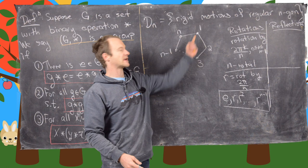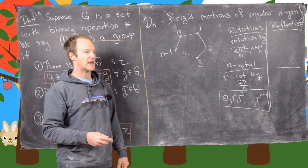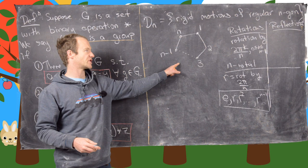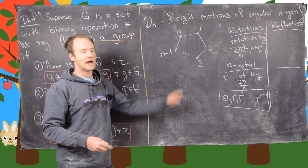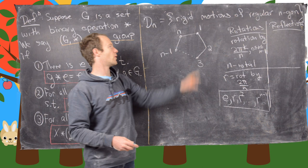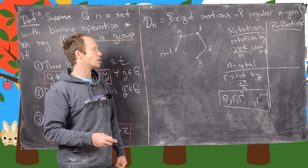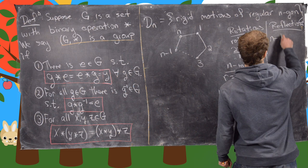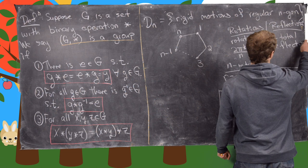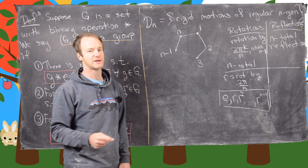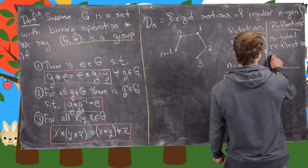We have reflections through every axis, and this breaks up into two parts. If n is even, we also have to consider reflections through the midpoint between two vertices. But when all is said and done, you get n total reflections. I'll let you think more about that and draw some pictures. We can call these s1 up to sn.